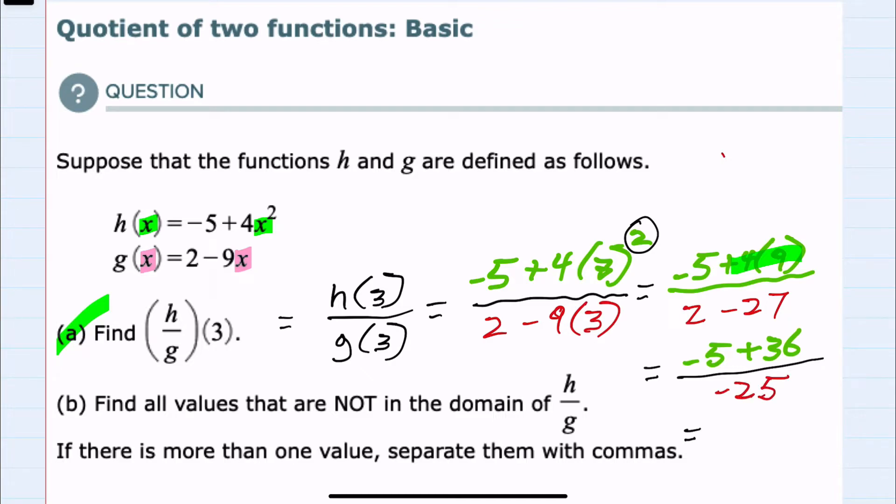Simplifying the numerator once more: -5 + 36 = 31. And -25 in the denominator doesn't simplify further. So this would be our solution for part (a): 31/(-25).